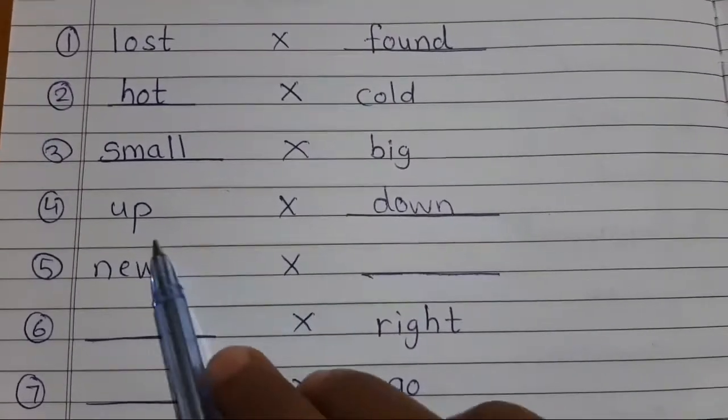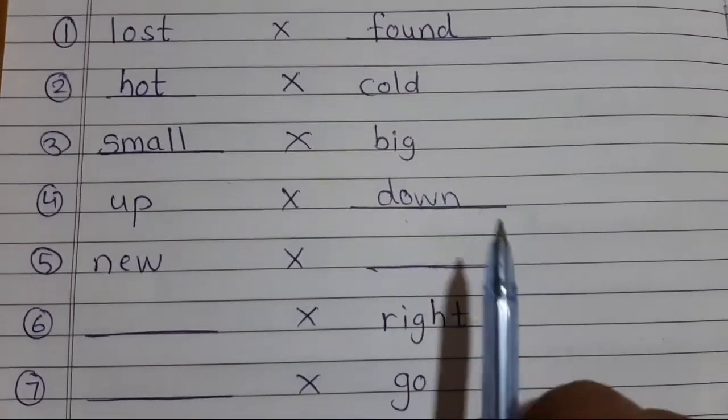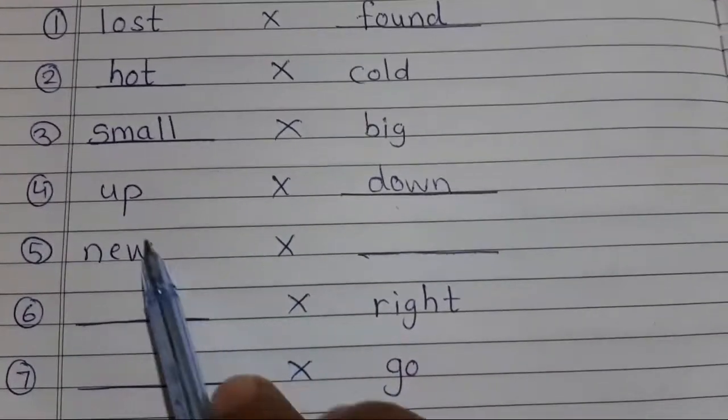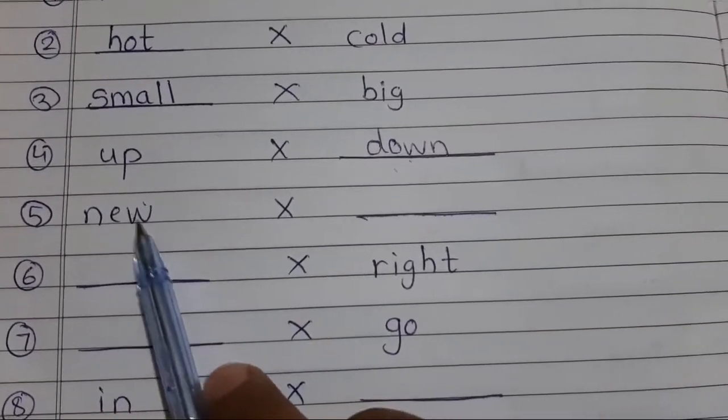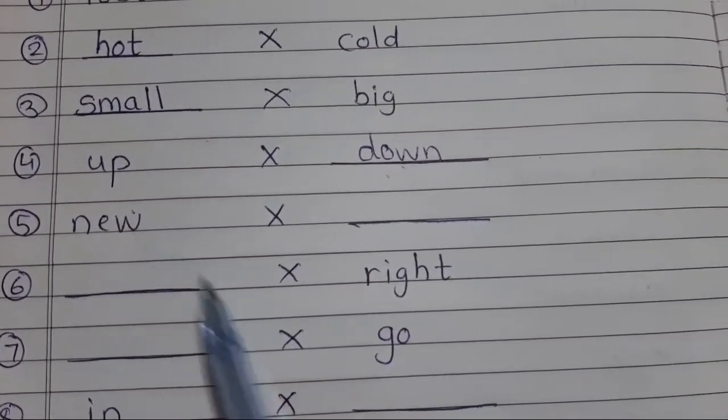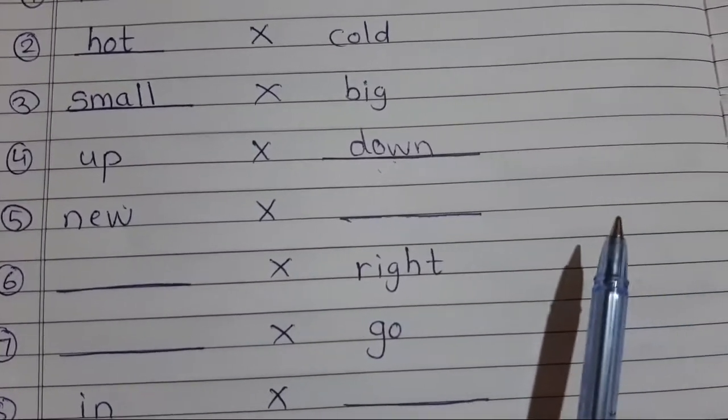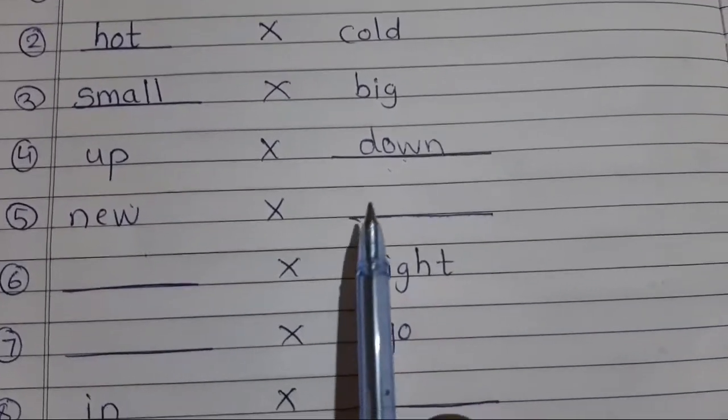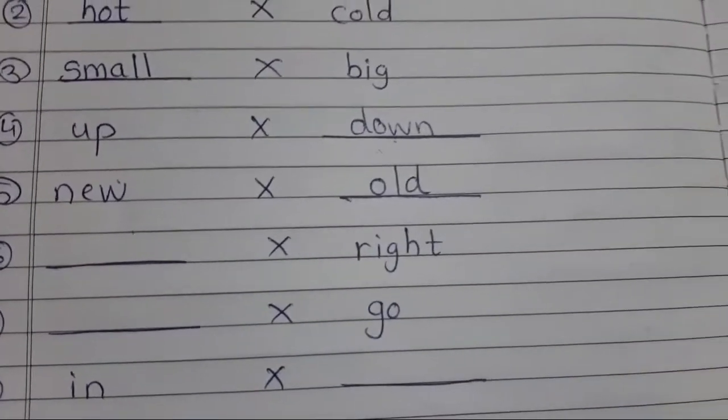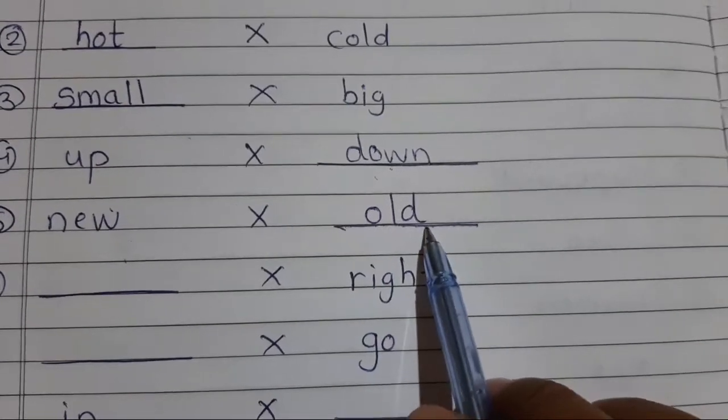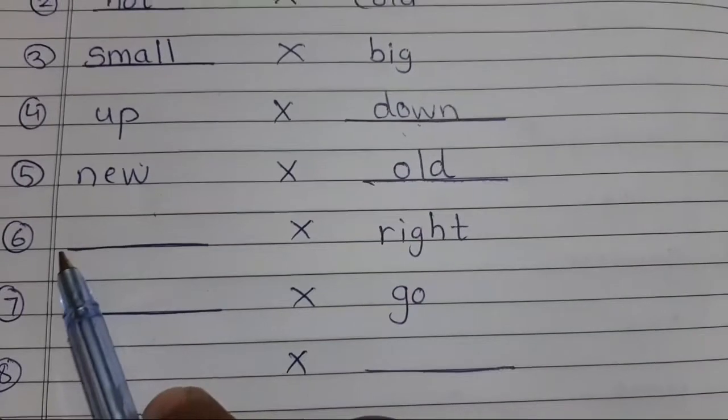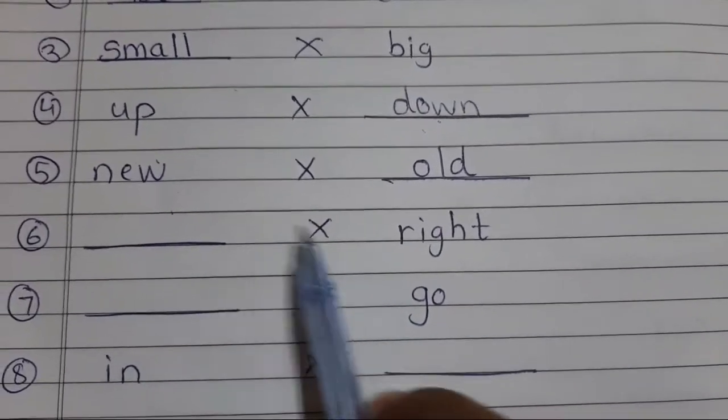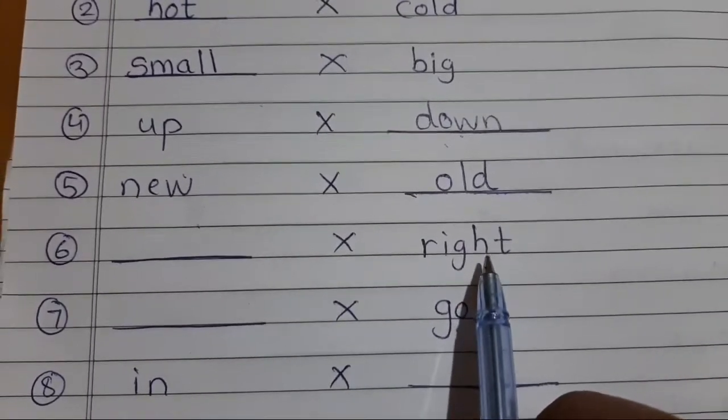Next is new, N-E-W, new. New means naya. Naya ka opposite, purana, right? New, opposite, old. Old, old, understand? New, opposite, old. The next is dash opposite right. Right miss, I taught you na, daya baya. So right, opposite, left.